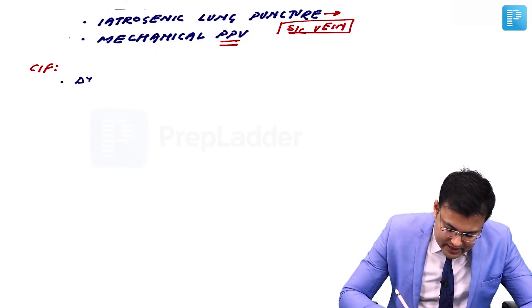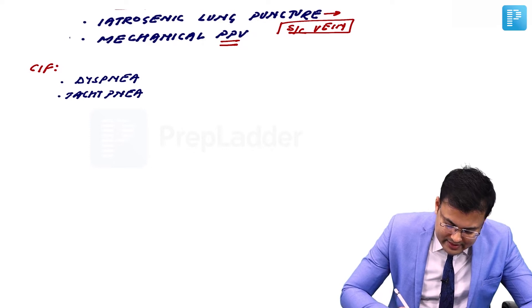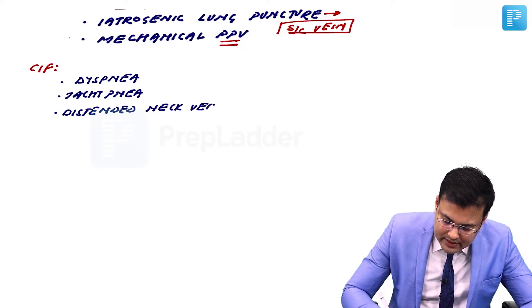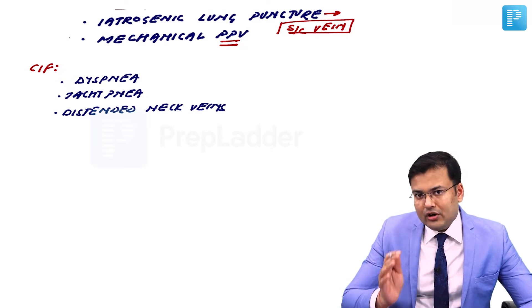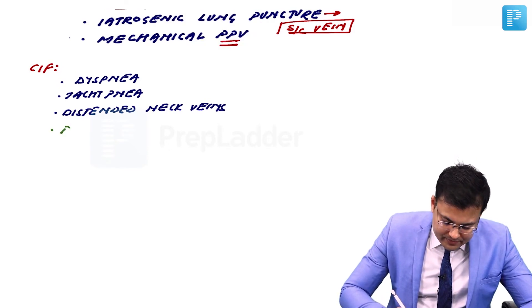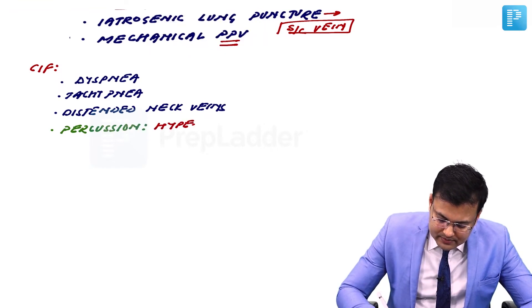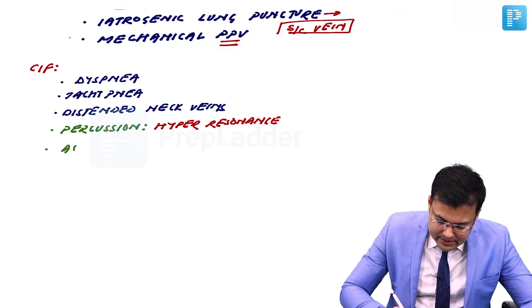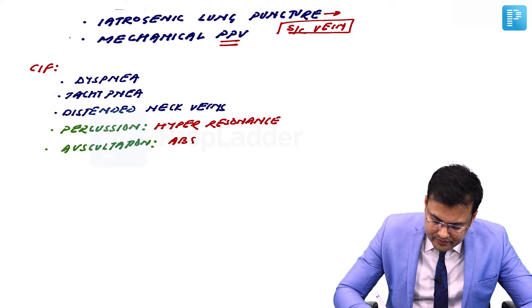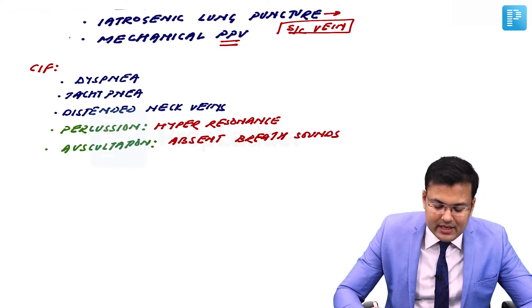Clinical features of tension pneumothorax: dyspnea, tachypnea, distended neck veins, hyper-resonance on percussion, absent breath sounds on auscultation, and hypotension.